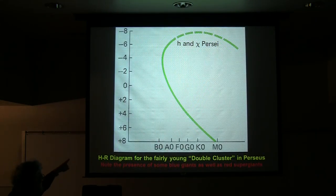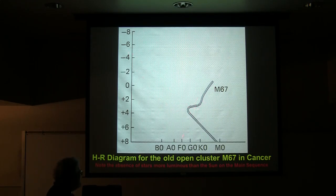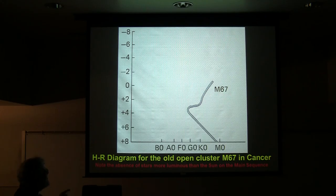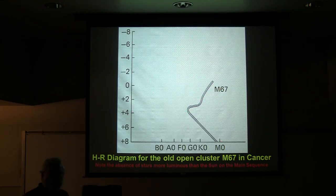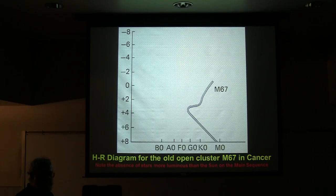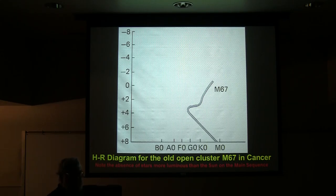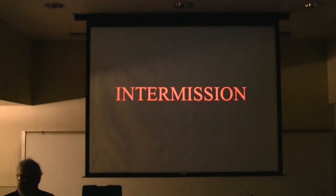Here's M67, an open cluster in Cancer. By the shape of its HR diagram, it's clearly an old cluster — nothing on the upper left. When this kind of information first came out, I heard a lecture in Pittsburgh where the astronomer had all these graphs and calculations about M67. Somebody in the audience asked him where M67 was, and he didn't know — he'd never observed it. He'd just gotten somebody's data and made graphs. If you do just one or the other, you're missing half of astronomy.